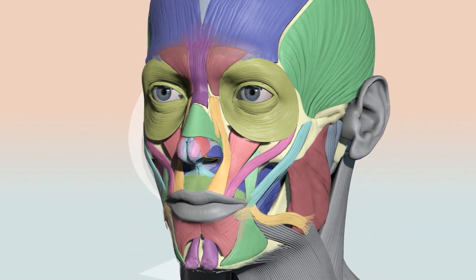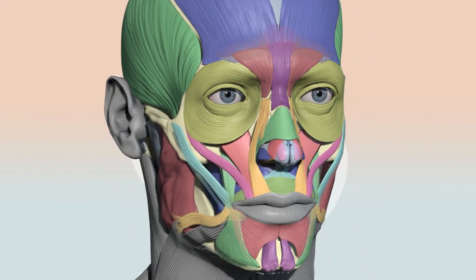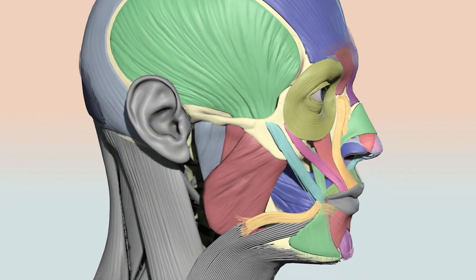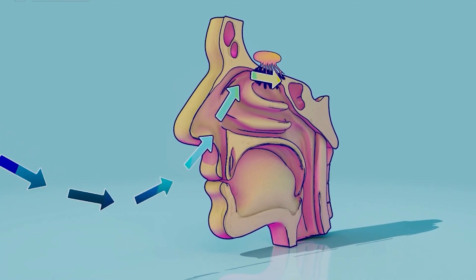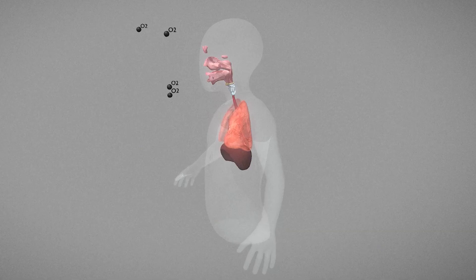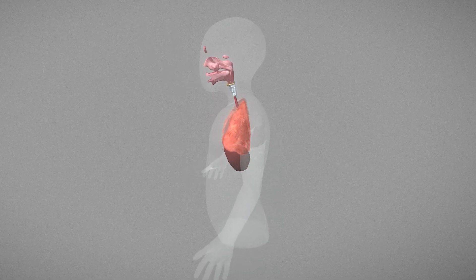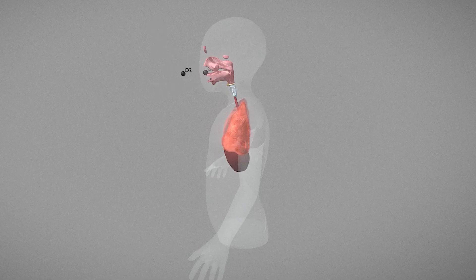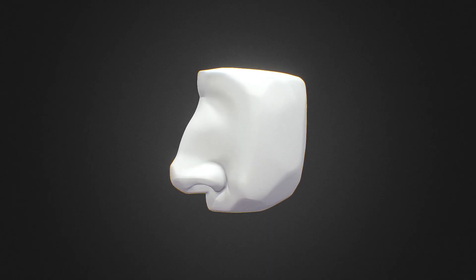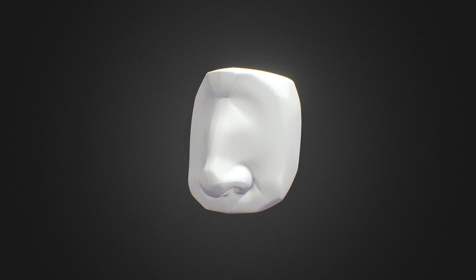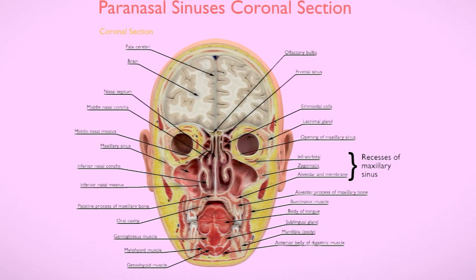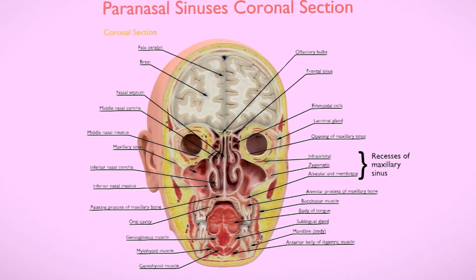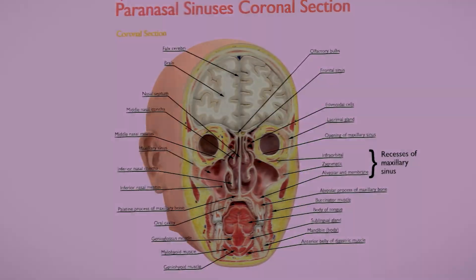While the external appearance of the nose is what most people recognize, its internal components are far more intricate and fascinating. These parts not only allow us to smell but also serve as a first line of defense against harmful particles in the air. It acts like a natural air filter, humidifier, and even contributes to how our voices sound. This explanation will walk you through the different components of the nose using clear and simple language.